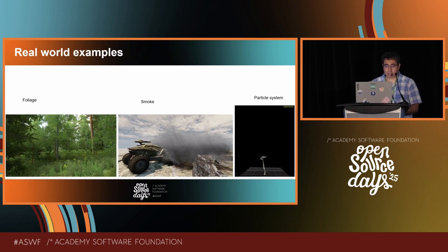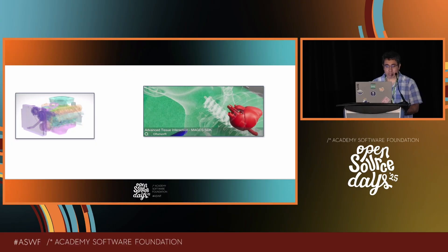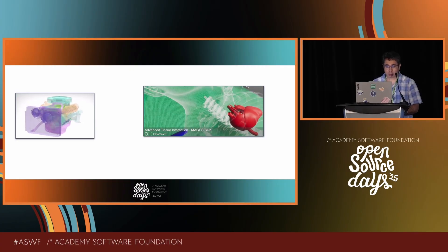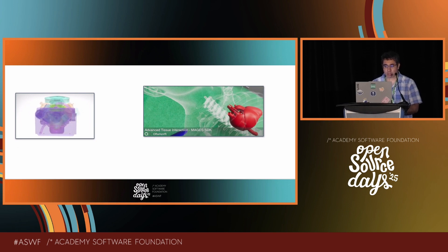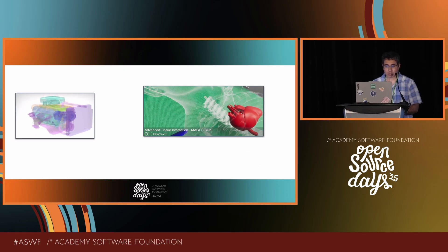Here are some real-world examples where OIT techniques are very important. In gaming or VFX, foliage, smoke effects, or particle systems all require some kind of order-independent transparency, specifically in real-time systems. In CAD software you will also need these techniques, as well as in medical software — for example VTK, a medical library used extensively in programs like Slicer — where transparency is important to focus on a particular element. Transparency also matters in ocean rendering, hair rendering, and other real-time techniques.